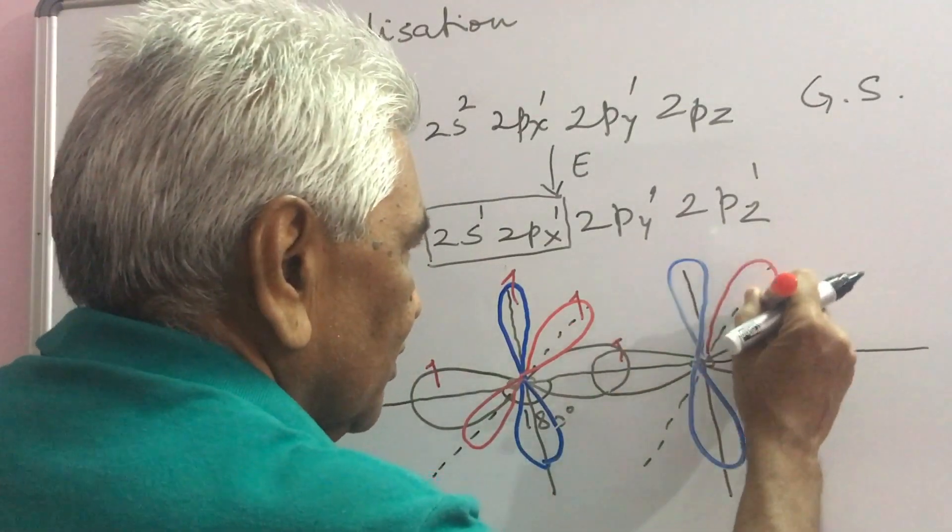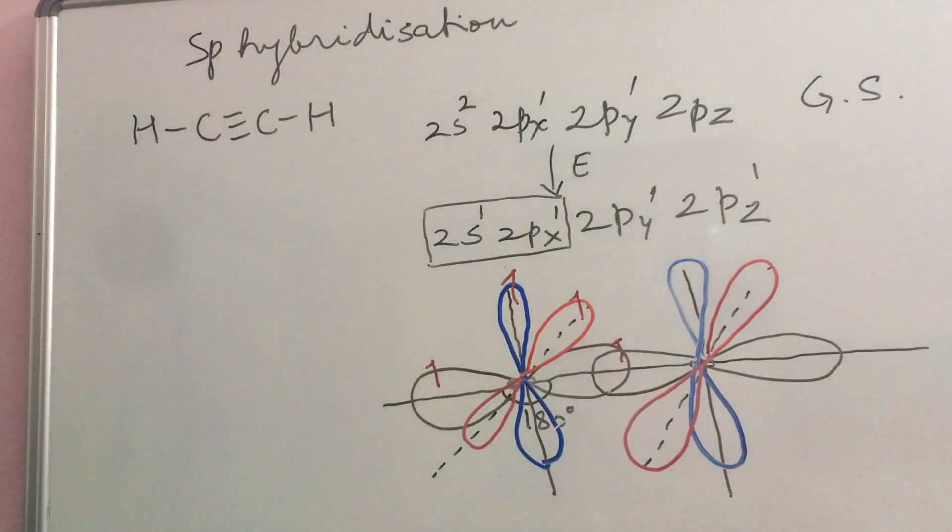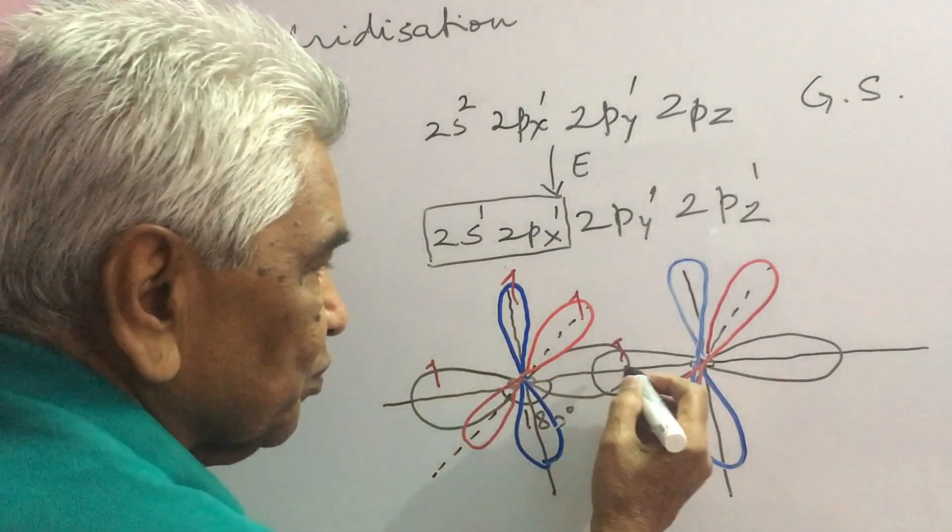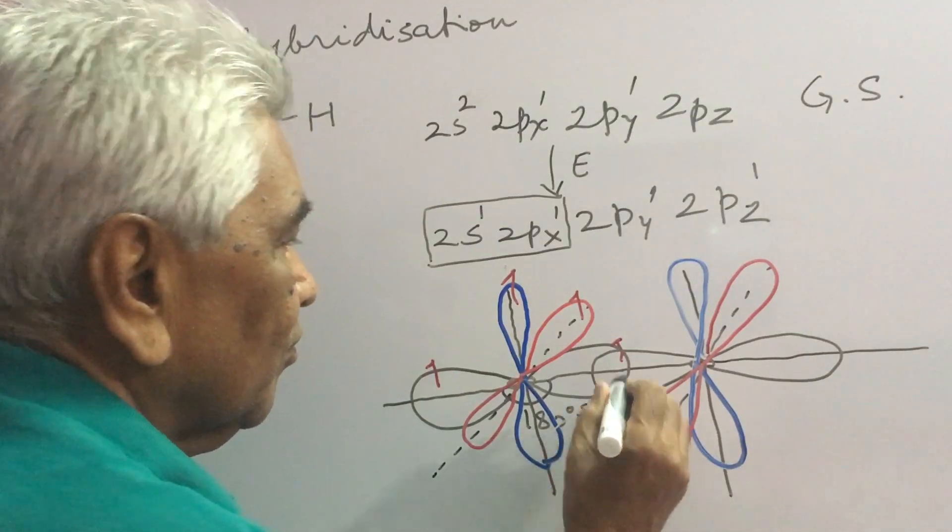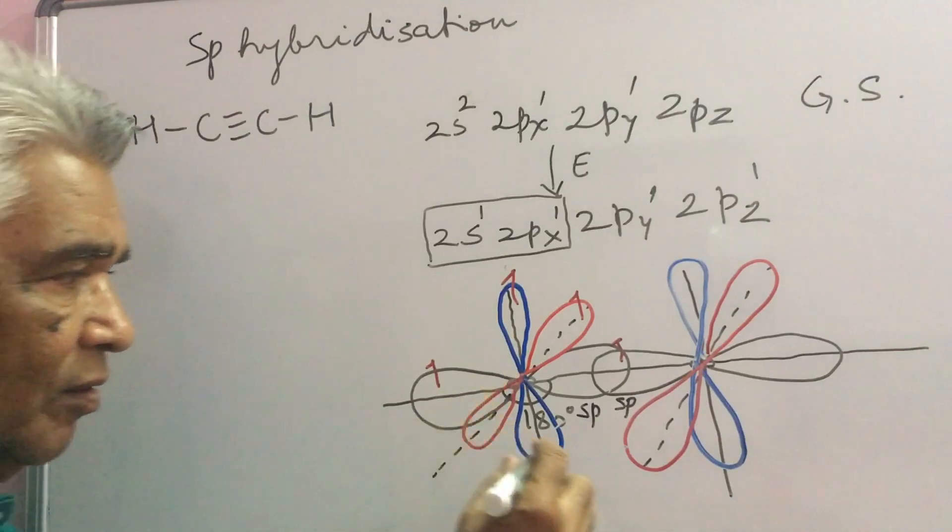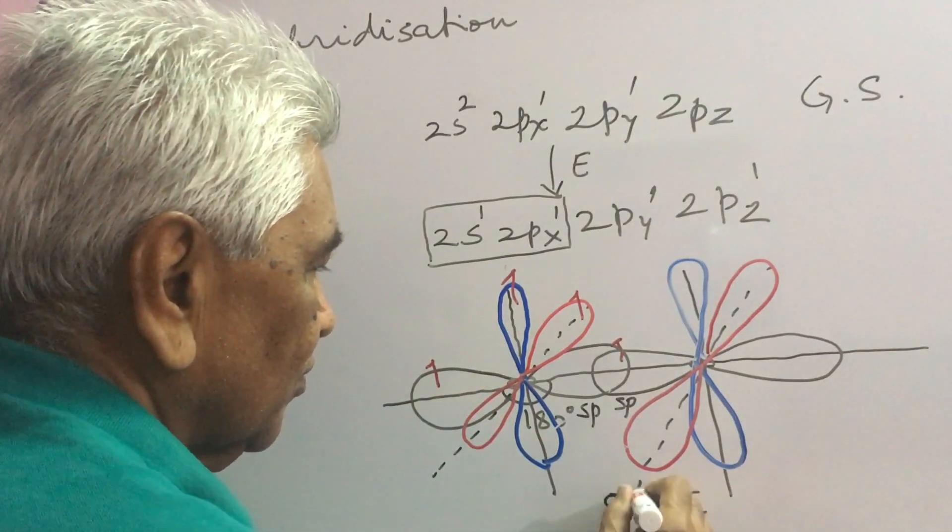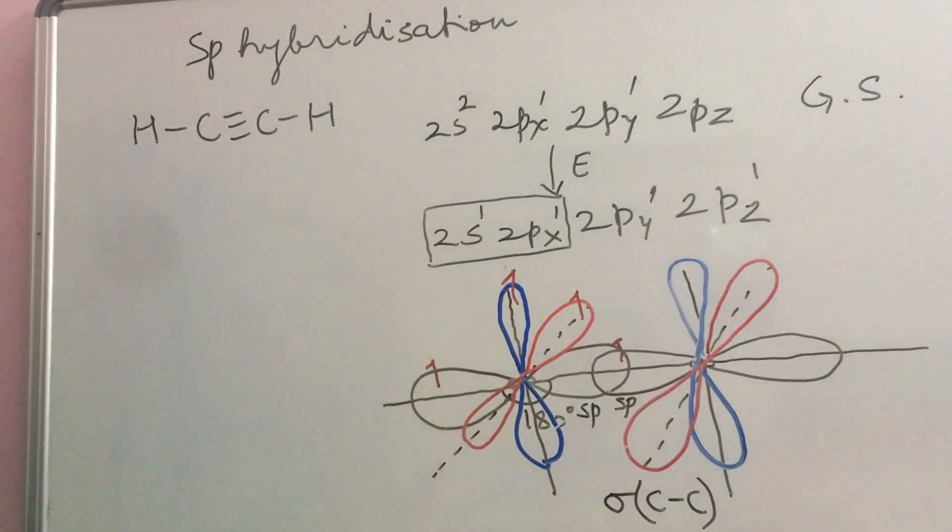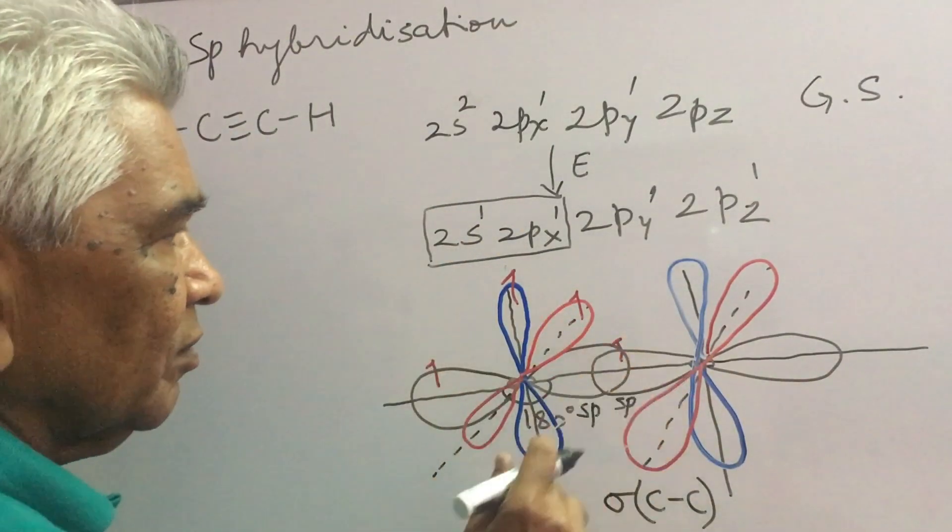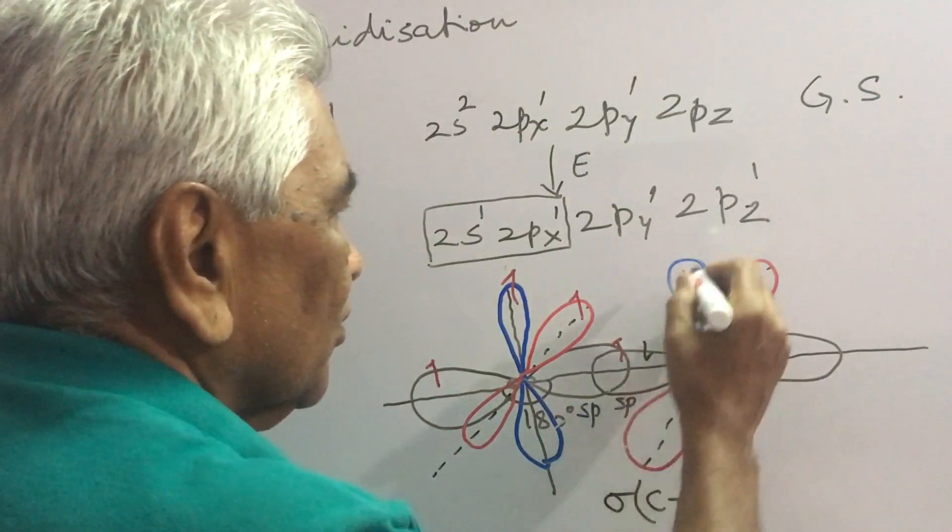So, this is S-P, S-P overlap. This is S-P, S-P overlap, forming a sigma-CC bond, accommodating two electrons, one from here and the other from here.